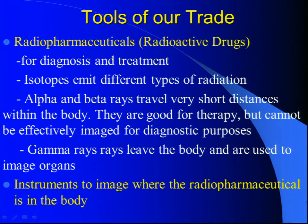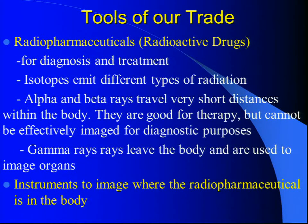In nuclear medicine, we have two tools to our trade. We have our radioactive drugs, which we call radiopharmaceuticals, and we have instruments in order to image them. Radiopharmaceuticals and radioisotopes have different types of properties.